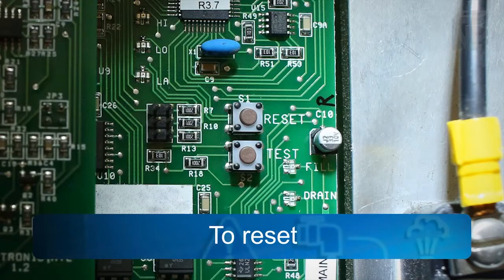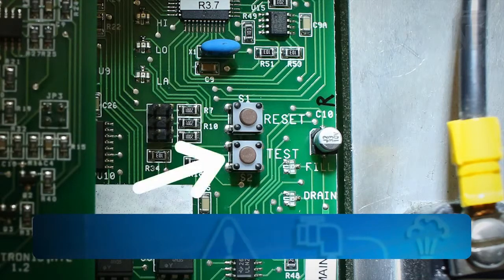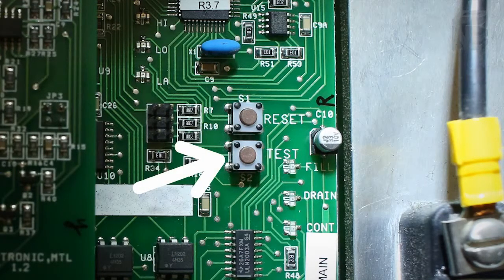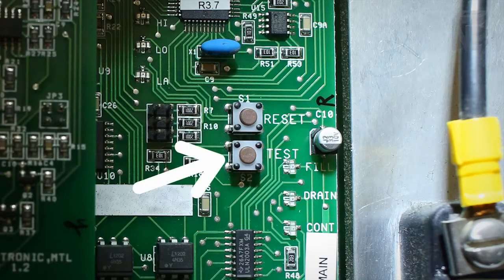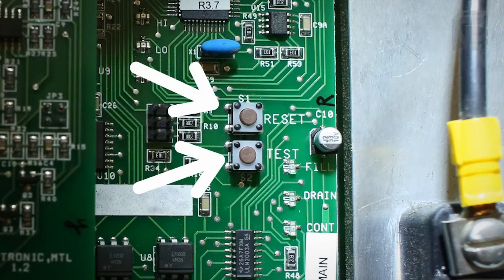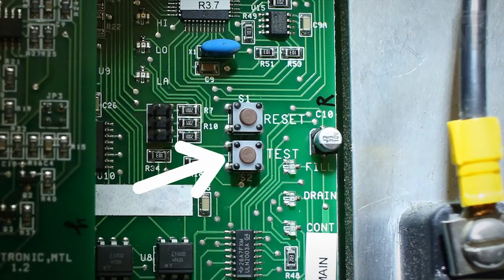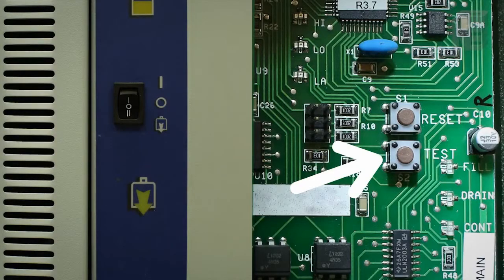To reset the unit after servicing, first press the test button on the main PC board, followed by the reset button. In that order. Test, then reset. When you first press the test button, the unit will go to a drain and the drain LED on the front panel will be on. Then press reset button.